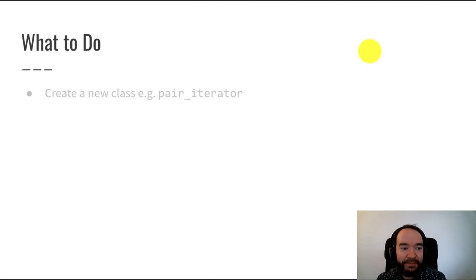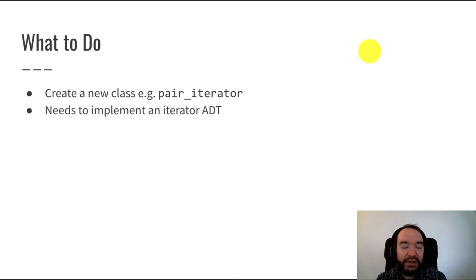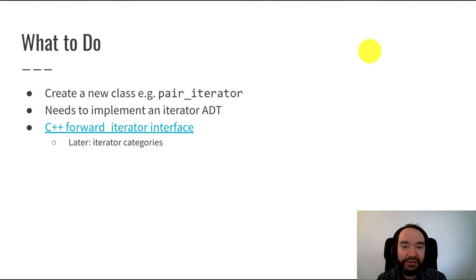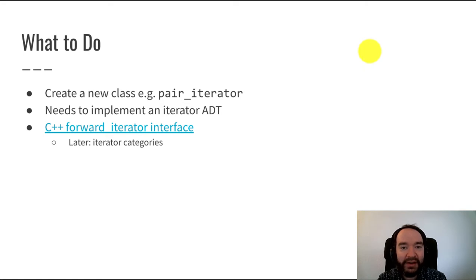So first, what do we need to do? We're going to create a new class called pair_iterator, and it will need to implement a certain abstract data type — a particular kind of iterator. In this video we're going to implement the forward iterator interface. C++ actually defines a number of different categories of iterators with different capabilities. We'll get into that later in the class. For right now, we're just going to focus on the simplest kind of iterator, which is the forward iterator.